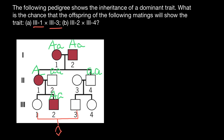His sister has normal phenotype, which means she got recessive allele a from each parent. So the mother is heterozygous — this is how we know — because the sister got a recessive allele from mother's side and another recessive allele from father's side.